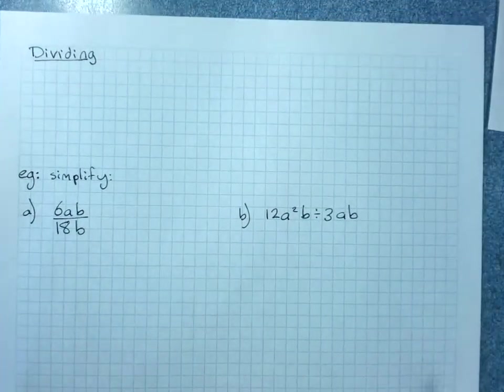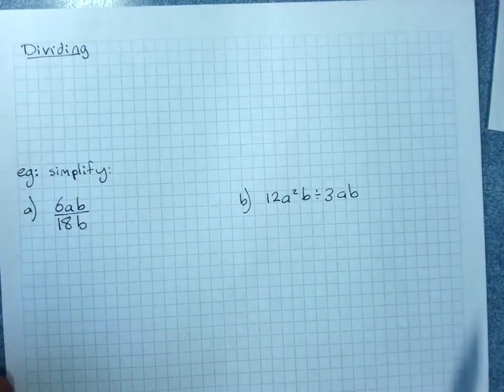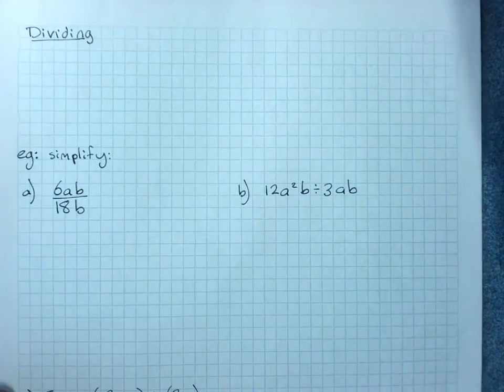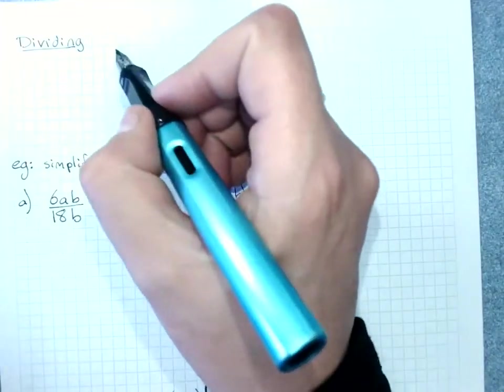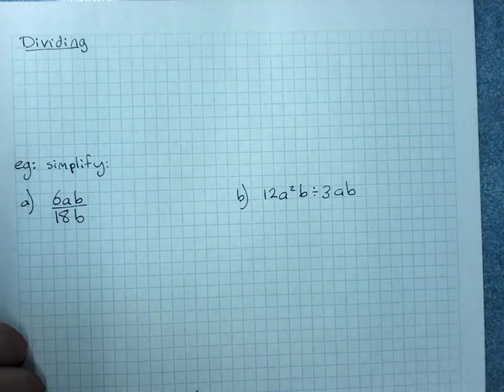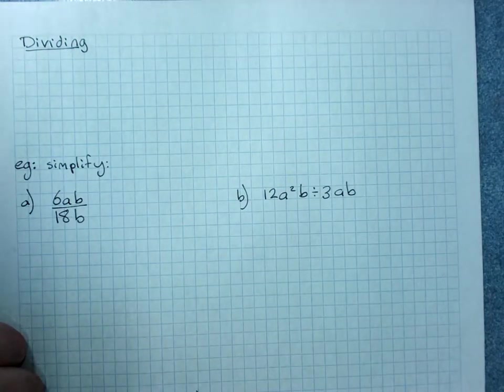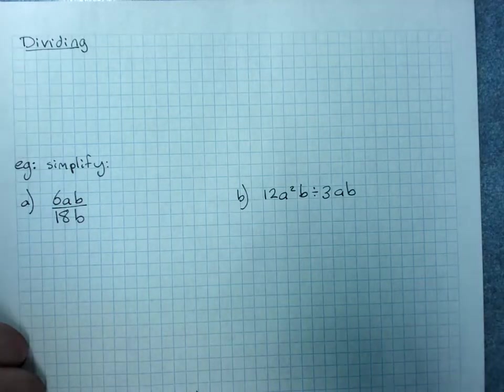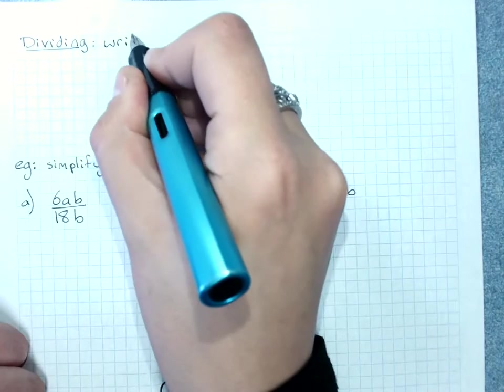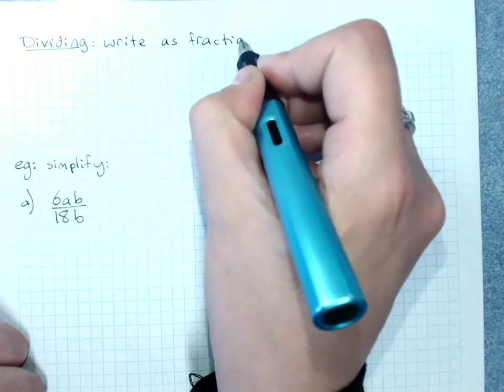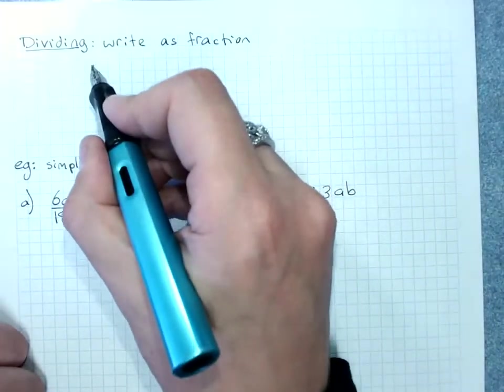Division. I'm going to take a little while on this. Sorry, it's a longish video. As I said, when we divide, you write it as a fraction. And I have lost track of my page where I did all my notes about what I want to say here. And you cancel common factors.